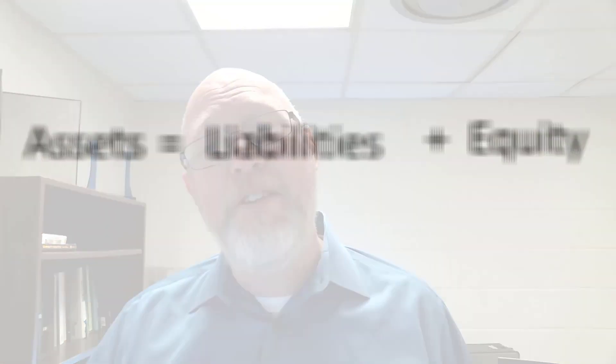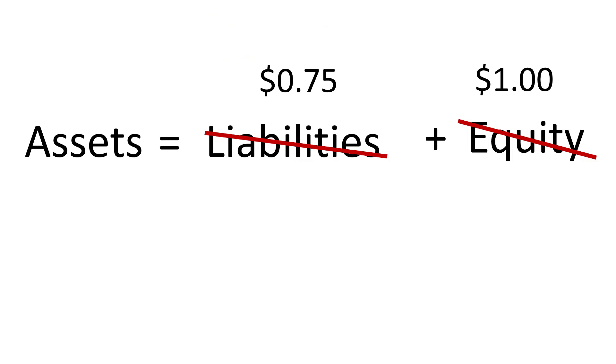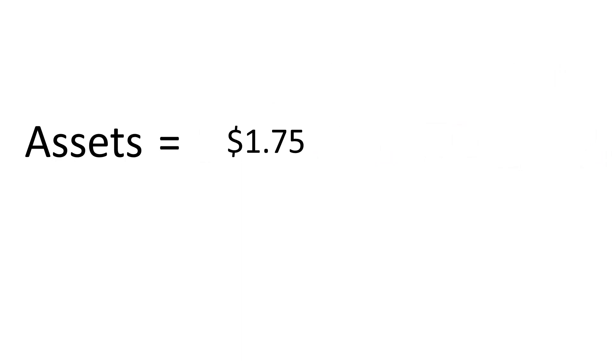Now we go back to the fundamental accounting identity: assets have to be equal to liabilities plus equity. It's an identity, not a formula or an equation — it must always be true; that's what makes an identity an identity. So we just plug the numbers in. We know the liabilities are 75 cents and the equity is a dollar. We plug those in, add them up, and we know we have a dollar seventy-five worth of assets. Now we know all of the information on the balance sheet — assets, liabilities, and equity.